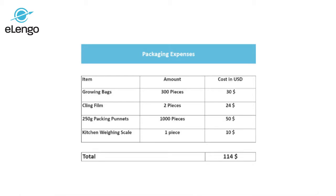The next expenses are the harvesting and packaging expenses. For punnets you need a thousand pieces — two hundred and fifty gram punnets at a cost of fifty dollars. You also need a cling film, which you use to wrap the mushrooms on the punnets — two rolls of cling film at a cost of twenty-four US dollars. The next expense is a kitchen weighing scale at a cost of fifteen US dollars.